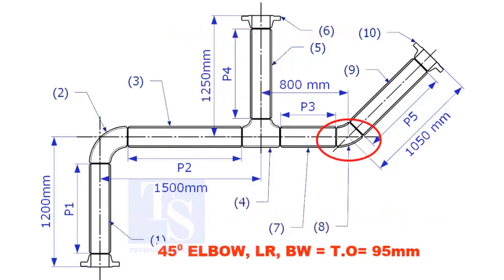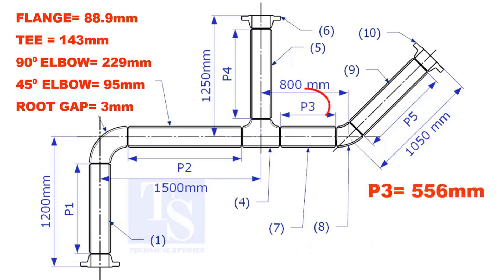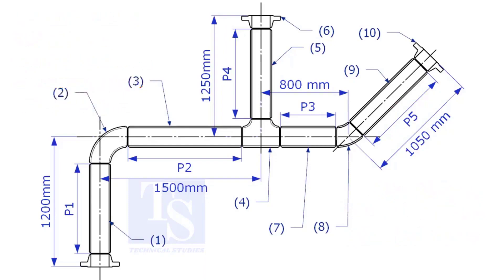Takeoff length of the 45 degree elbow is 95mm. The length of pipe P3, P4, and P5 are given. You can cross check if the answers are correct or not. Please check the description for this sketch. Thank you for watching.